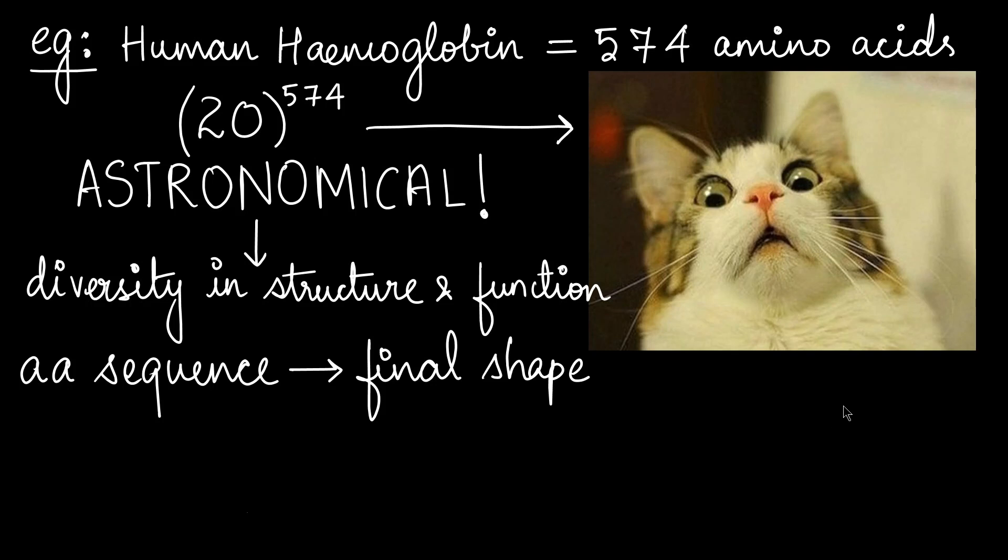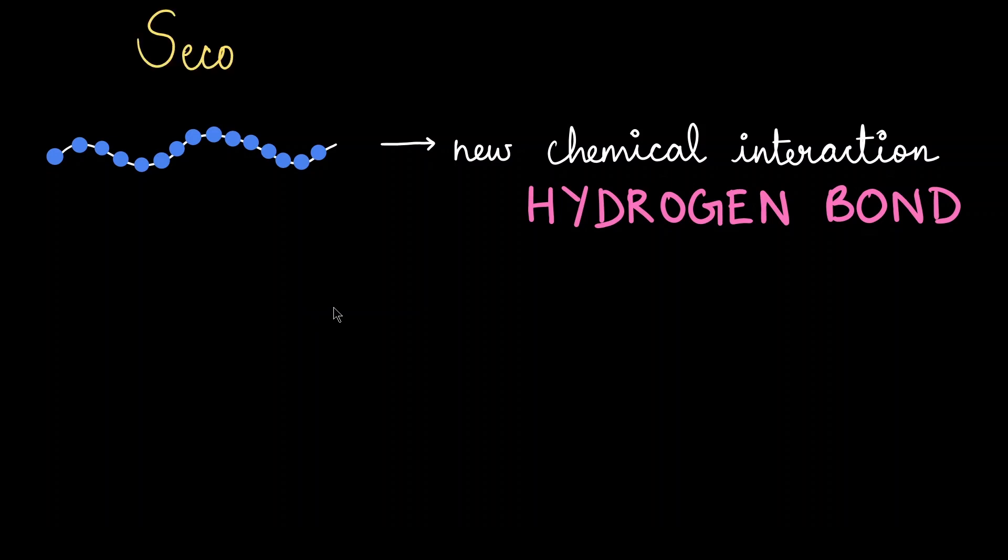Even though there are these astronomical number of combinations, nature always leans towards a structure which is chemically stable. So finally, when a structure forms, it should be a stable structure. That is why, in spite of all these possibilities, we only have one single structure for human hemoglobin. The amino acids are starting to discover new interactions with other amino acids using a new chemical bond, which turns out to be a hydrogen bond.